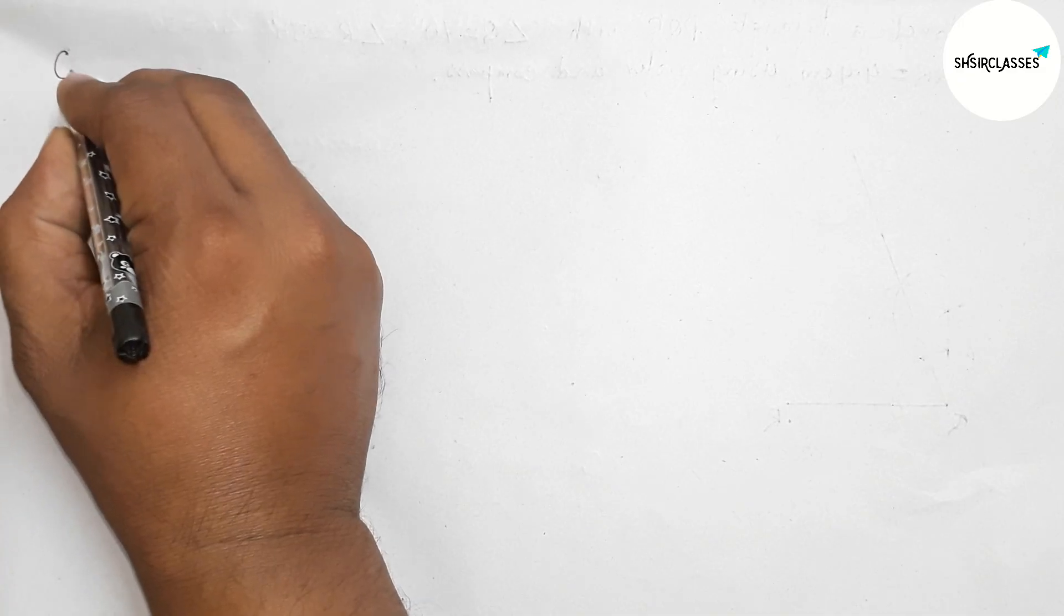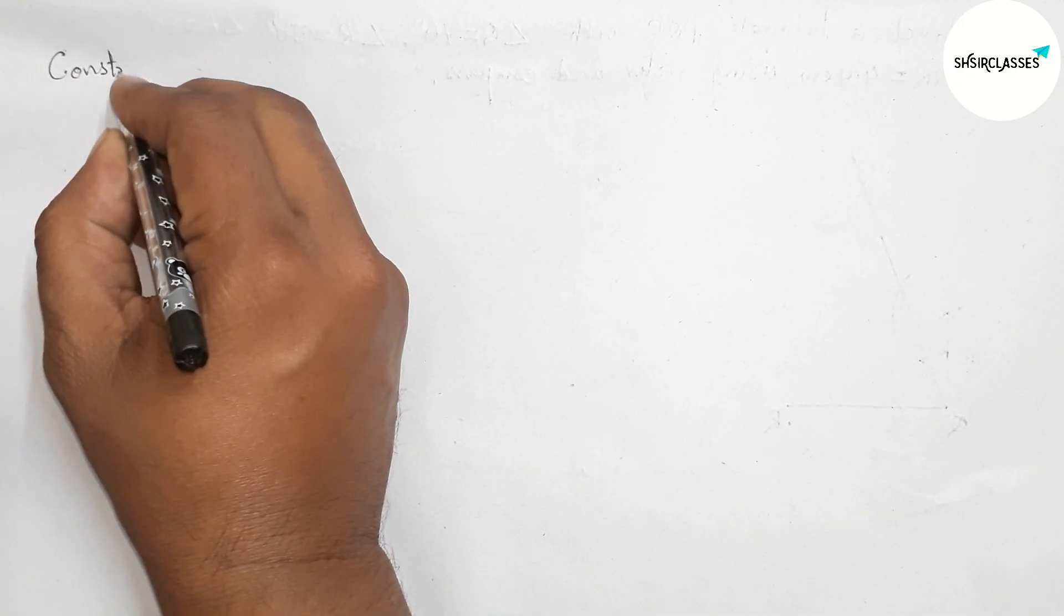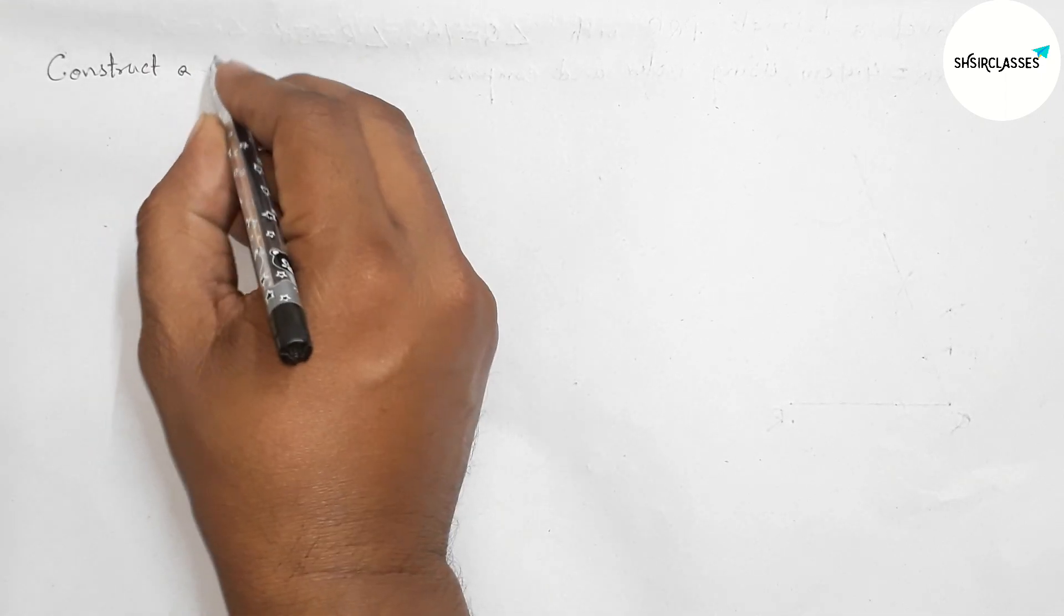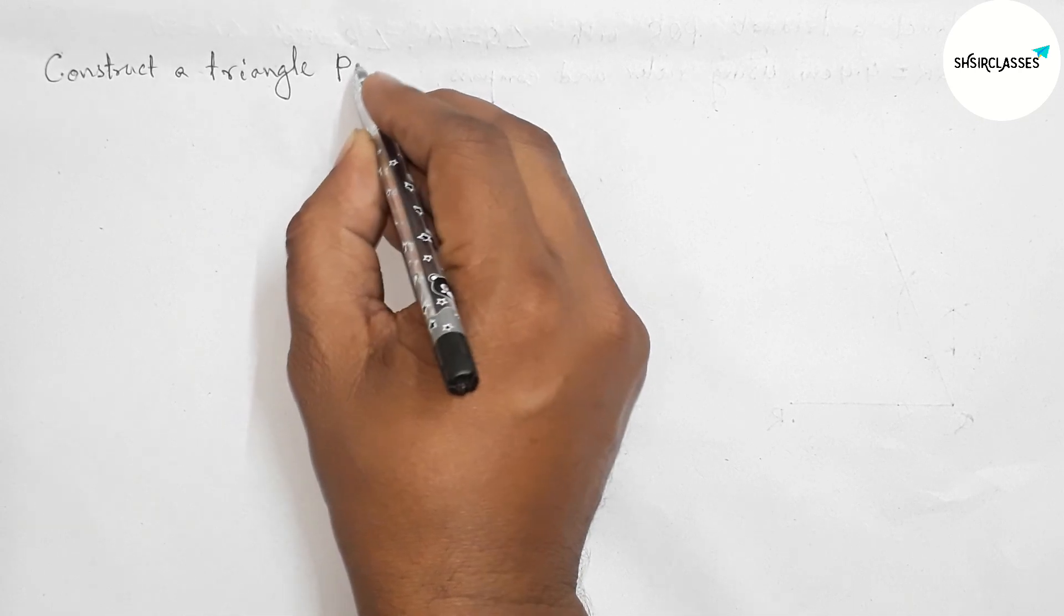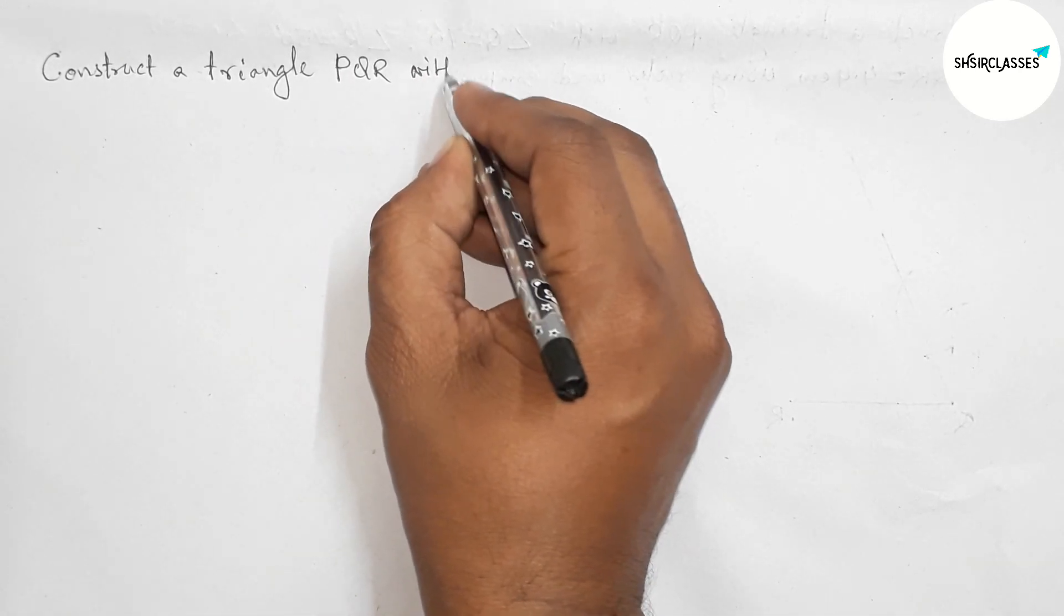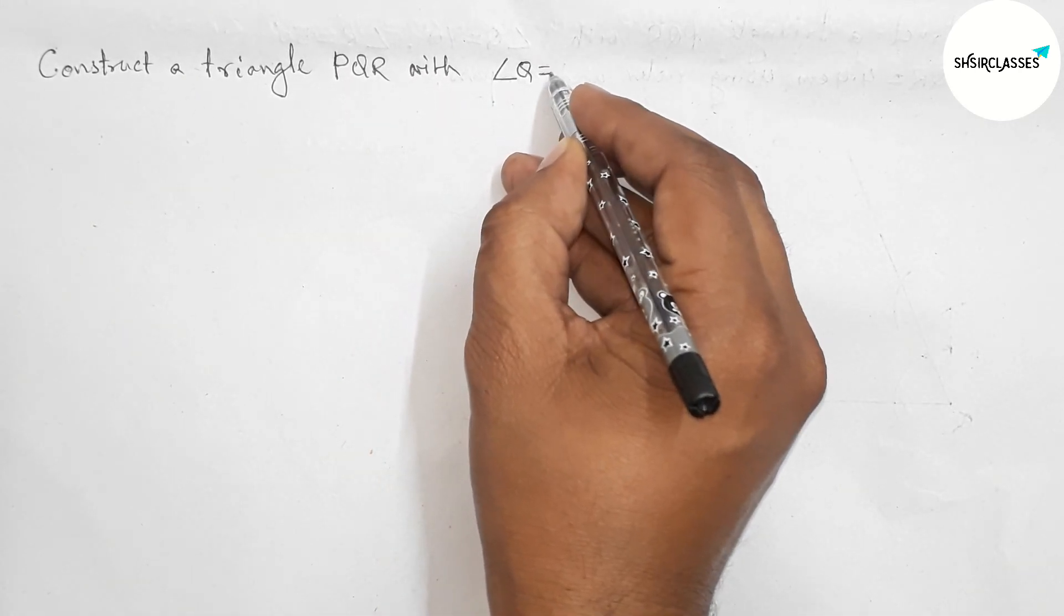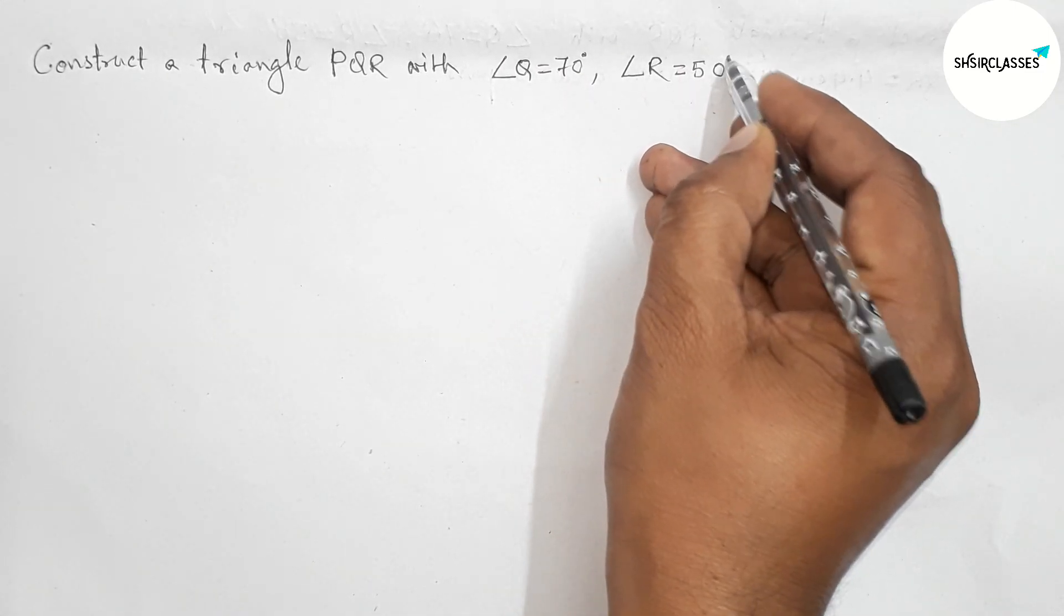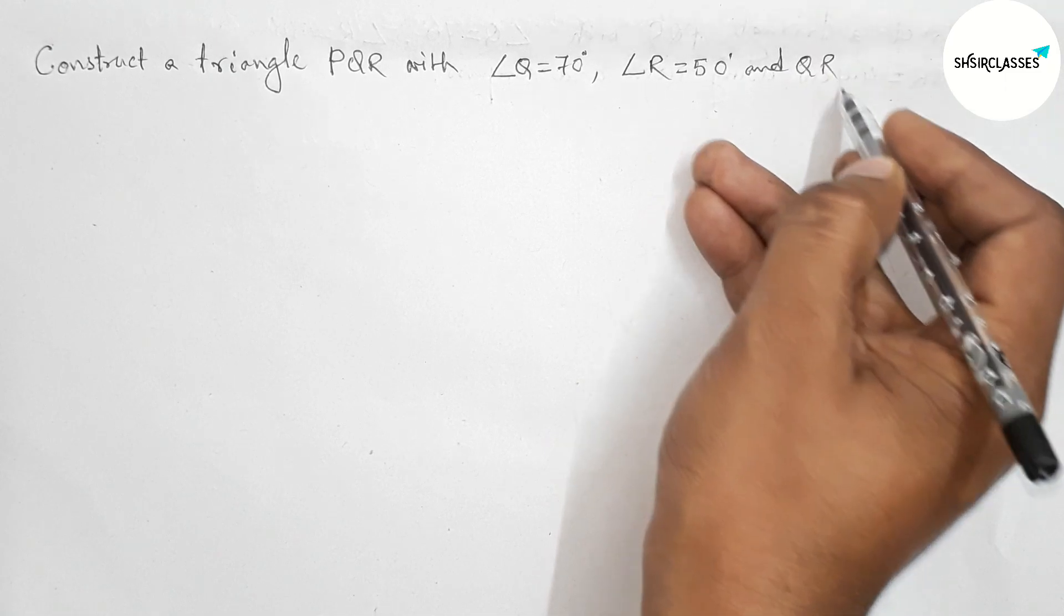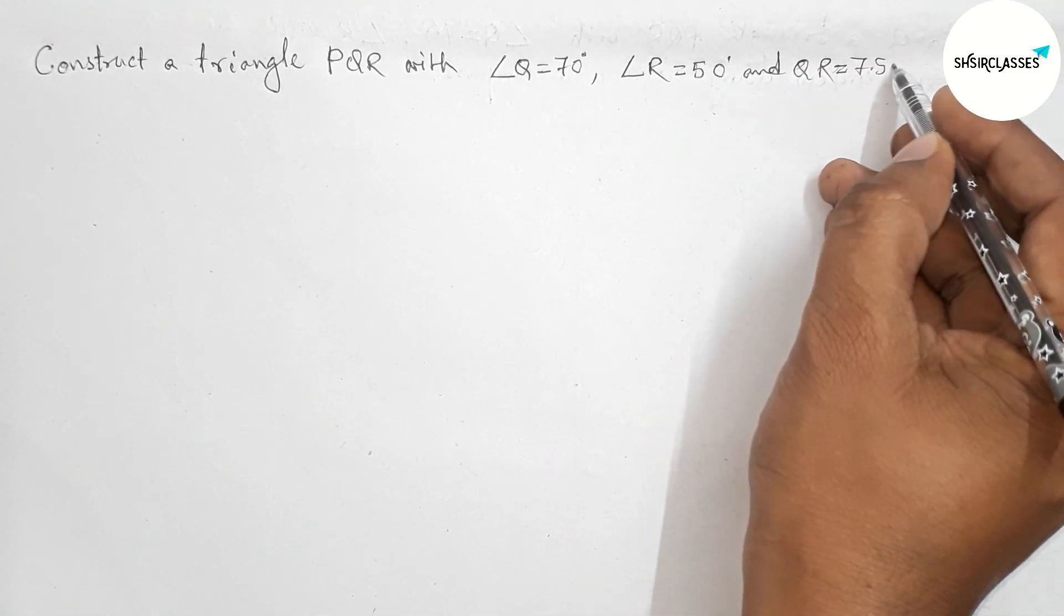Hi everyone, welcome to Essayshare Classes. Today in this video, we'll learn how to construct a triangle PQR with angle Q = 70°, angle R = 50°, and one given side QR = 7.5 centimeters in an easy way. So let's start.